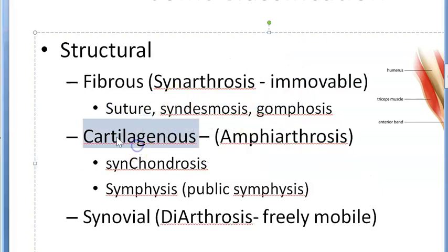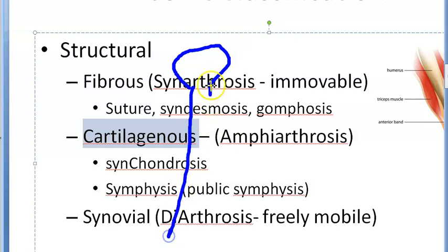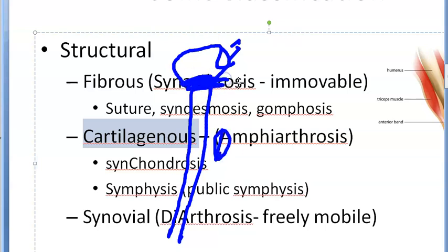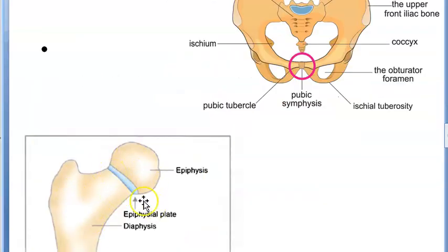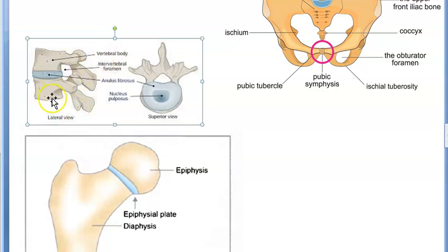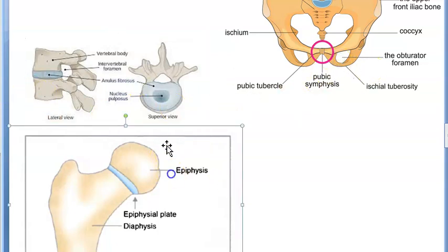So if somebody asks you cartilaginous joint, you will tell pubic symphysis, vertebral column, etc. The epiphysis and the diaphysis of the long bones - the long bone will have epiphysis and diaphysis. The joining of these two - there will be a growth plate - this is a cartilaginous joint. Here you can see epiphysis joining with the diaphysis; you have an epiphyseal plate here - this is a primary cartilaginous joint. The vertebral bodies are connected by an intervertebral disc - so you should know this is again a cartilaginous joint. So the pubic symphysis, intervertebral disc, and epiphysis to diaphysis - all these are cartilaginous.